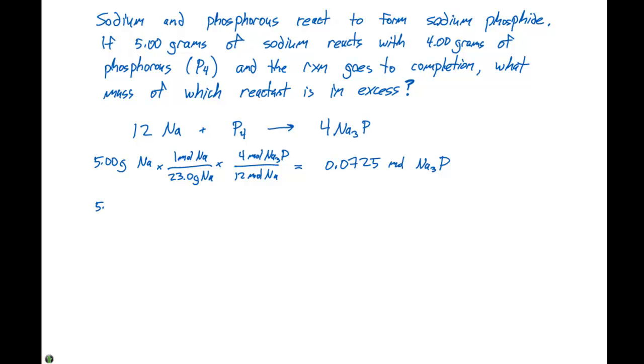Now we'll do the same calculation, but instead we'll start with 4.00 grams of the P4. From the periodic table, we know that one mole of P4 is going to be 123.9 grams. From the balanced chemical reaction, for every one mole of P4 that's consumed, four moles of Na3P are produced. When we do the calculation, we get 0.129 moles of Na3P.